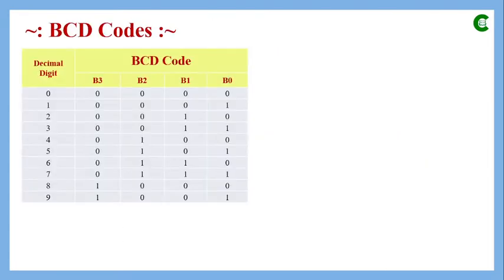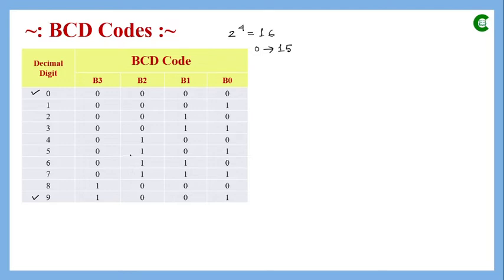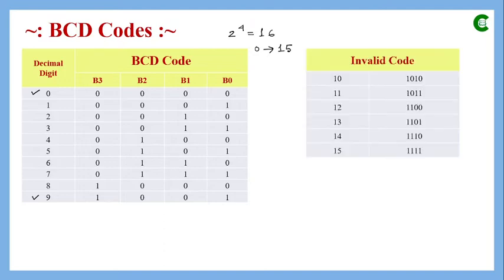In BCD, decimal digits 0 to 9 are each represented by 4 binary bits. While 4 bits in binary can represent 16 numbers (0 to 15), BCD only uses 0 to 9. The binary combinations for 10 to 15 are invalid in BCD — those six combinations have no place in BCD code.